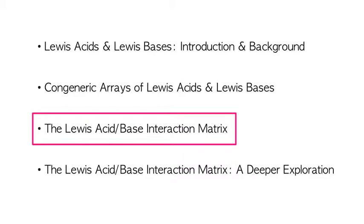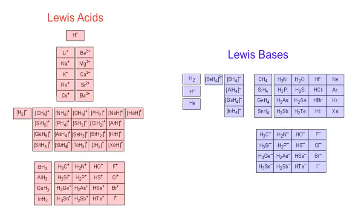We're going to give a brief introduction to this object. In the previous video we saw how the five hydrogen probe experiments generate congeneric arrays of Lewis acids and Lewis bases. We're now going to take these Lewis acids and Lewis bases and study them further.